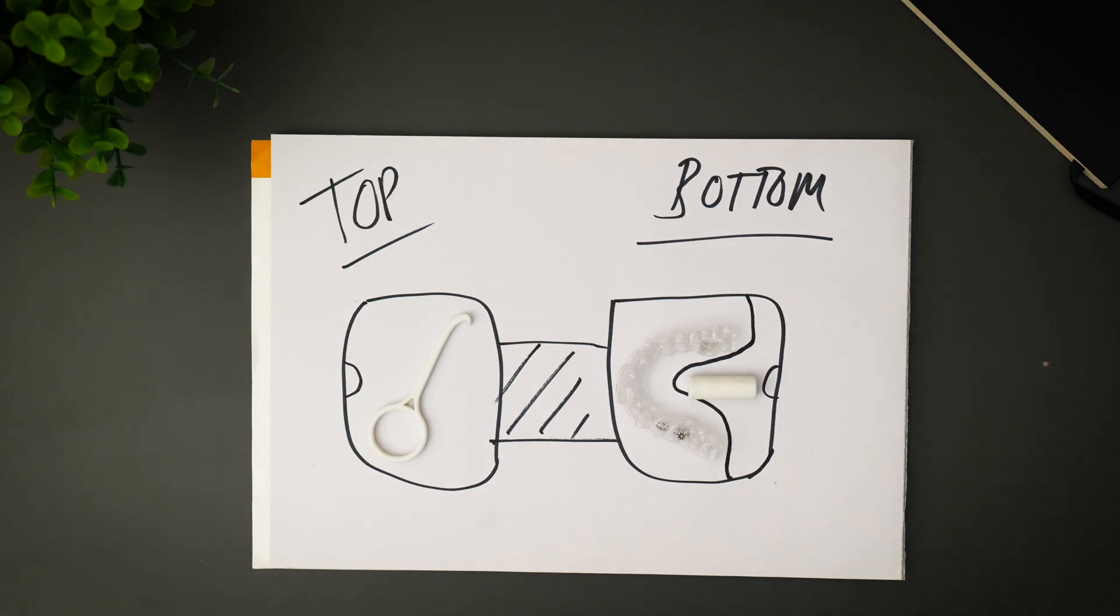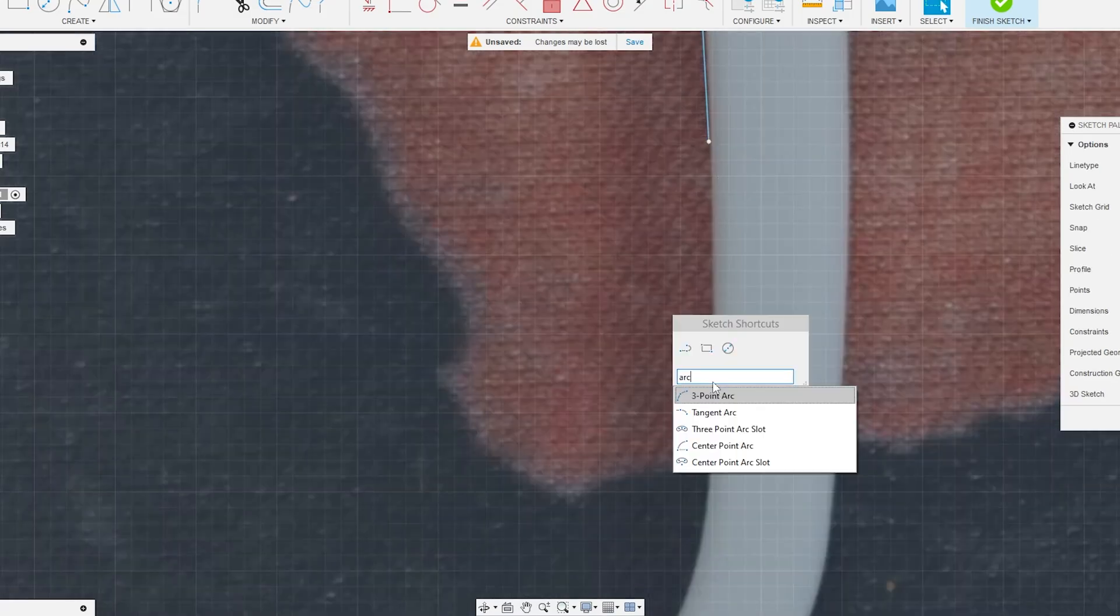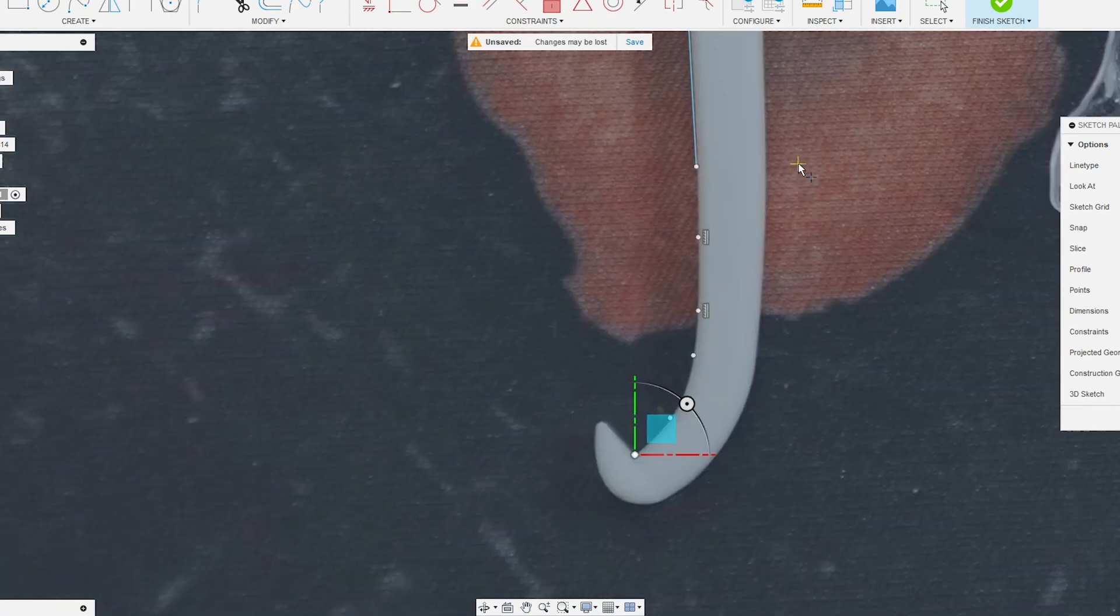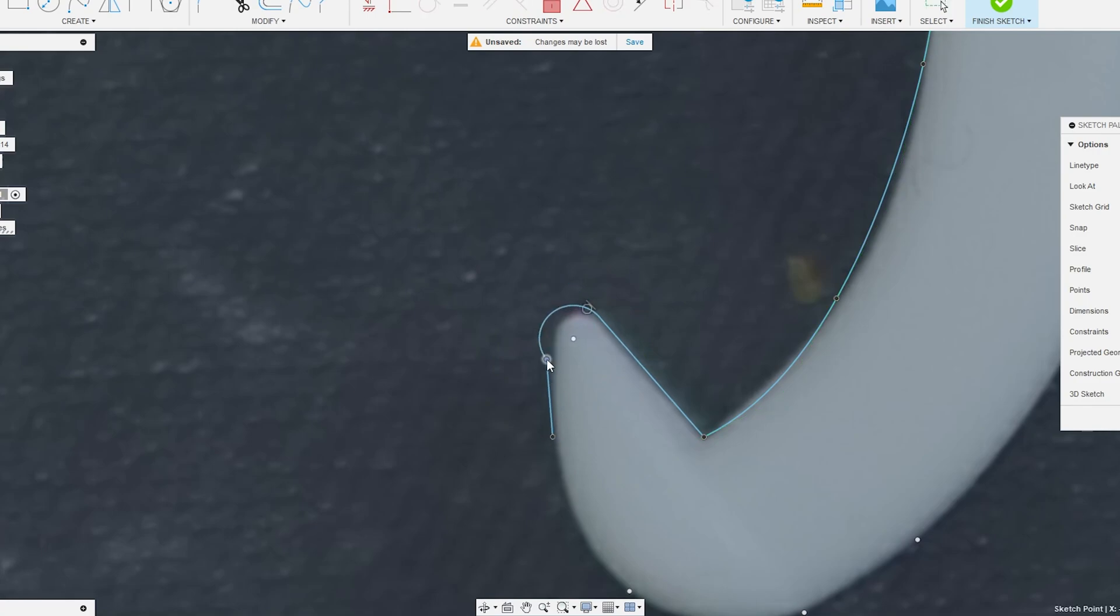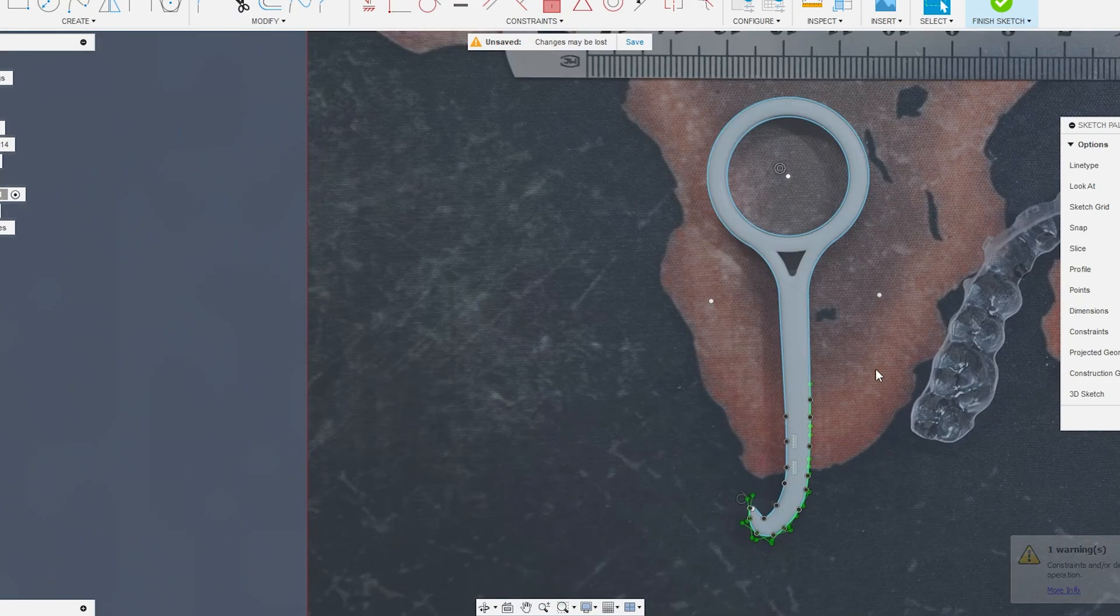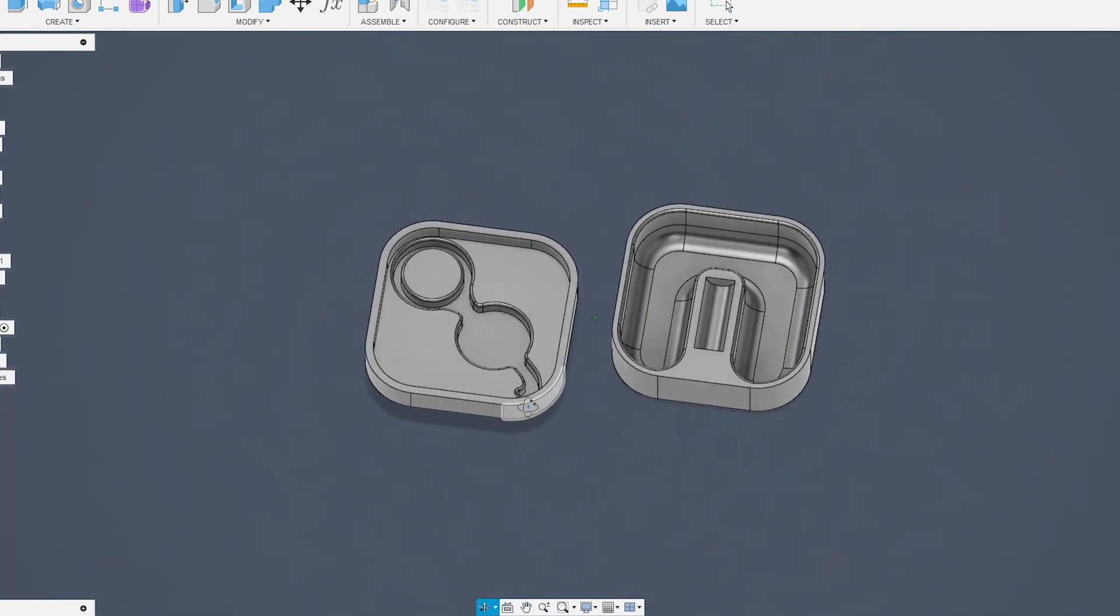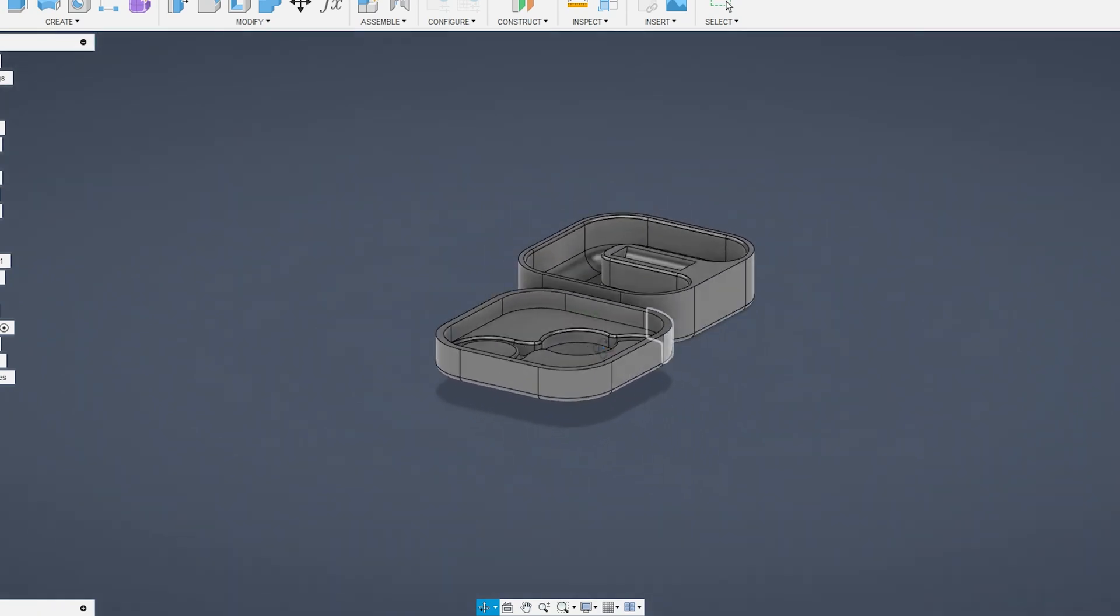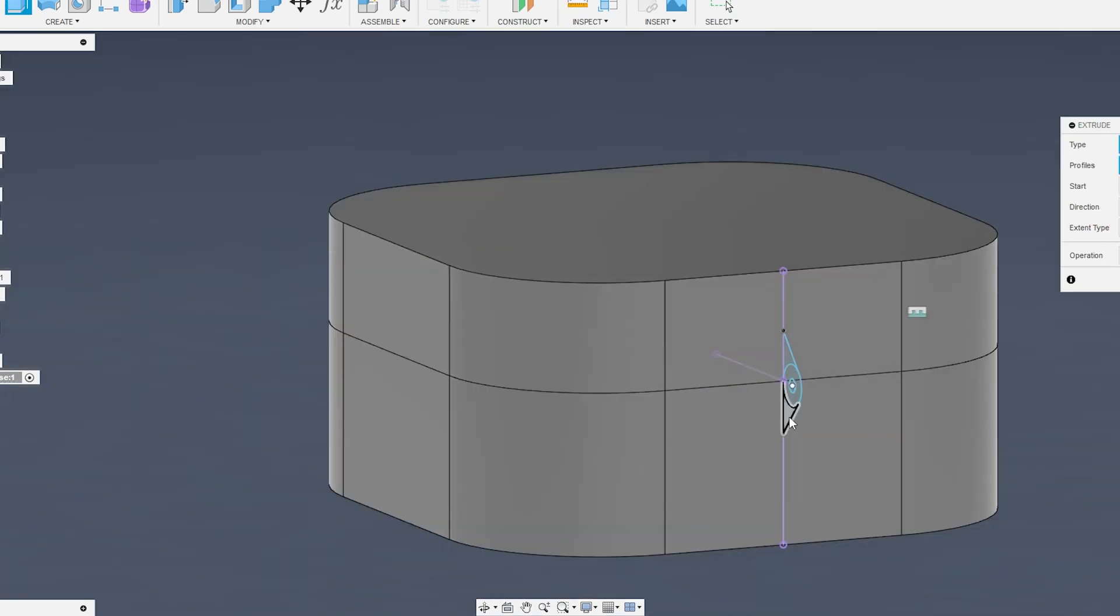Now we're going to jump into Fusion 360 and see if we can turn this and get one step closer to making it into some sort of reality. To start off with, I made some rough models of the aligners, the Chewy, and then the removal tool. For the removal tool I took a calibrated image, imported it as a canvas and traced around it because it had a bit of an awkward shape. The aligner and the Chewy were very simple to make.